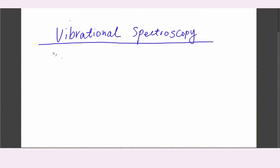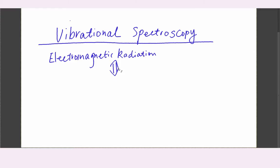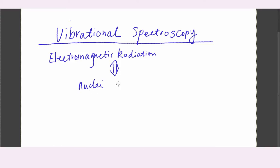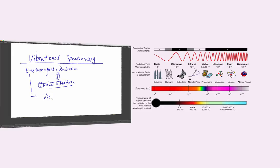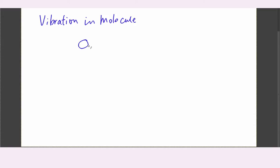Vibrational spectroscopy is a method to detect the interaction between electromagnetic radiation and the nuclear vibration inside the molecule. This electromagnetic radiation exists in many forms like visible light, UV light, infrared, X-ray, microwave, and so on.